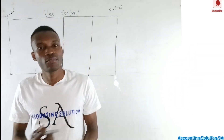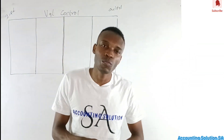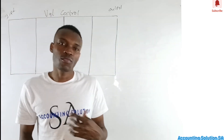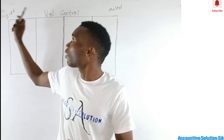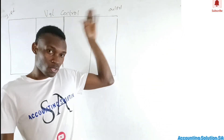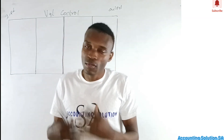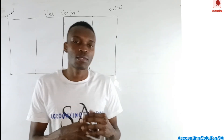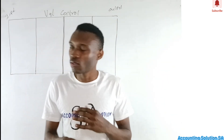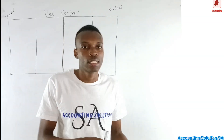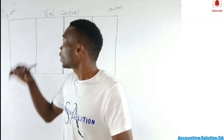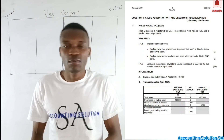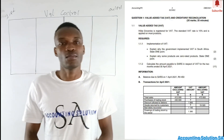In today's video we are going to do a VAT control account. Under a VAT control account we must be able to identify our VAT input as well as VAT output on the credit side. The question paper we have — I'm going to go through the first part which was a theory part. I'll show the solution on screen so you can check the possible answers and understand better. After that we're going to do the VAT control account, so please watch the entire video.